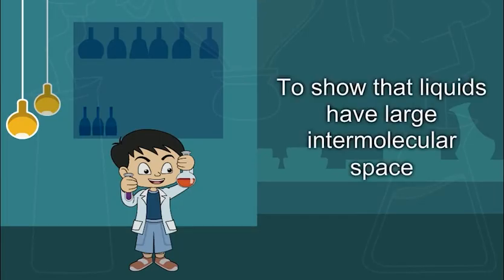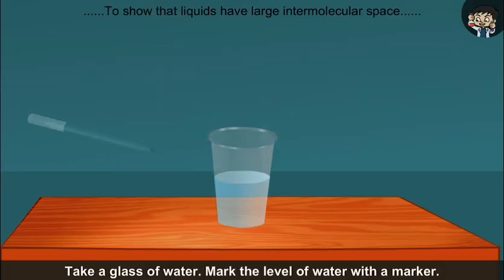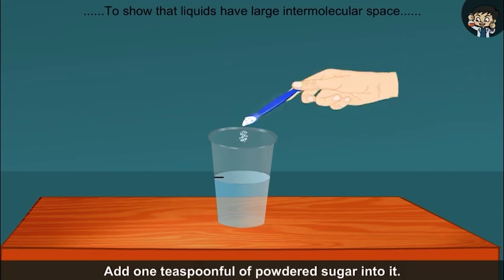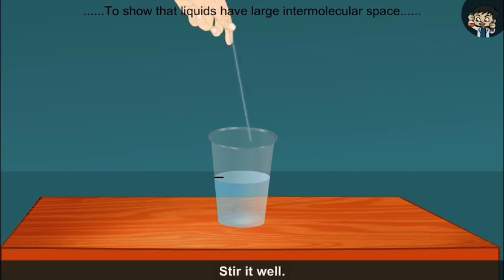To show that liquids have large intermolecular space, take a glass of water. Mark the level of water with a marker. Add one teaspoonful of powdered sugar into it. Stir it well.